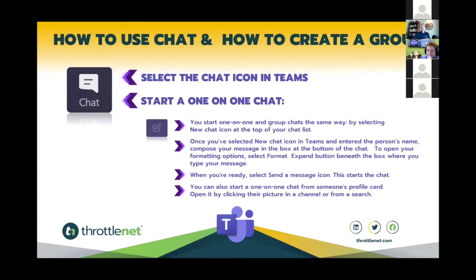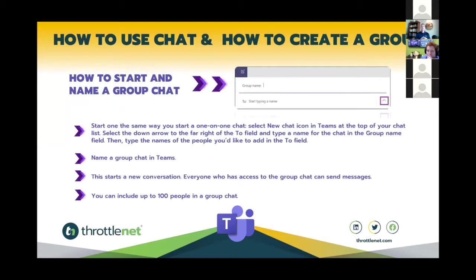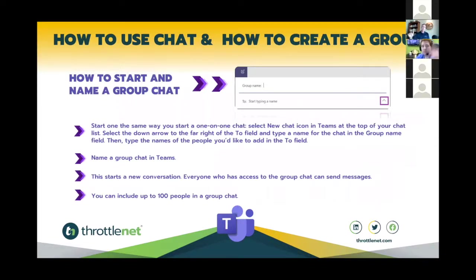For a group chat, you start the same way — select the new chat icon, then select the down arrow to the far right in the 'To' field, and type a group name. You can have multiple chats running named by discussion type — for example, Christmas party planning or company picnic planning. Once named, everyone you designated will be part of that discussion. You can include up to 100 individuals in a group chat.